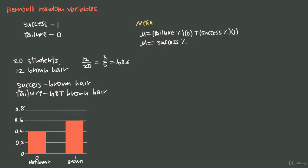We already know the percentage of success is 60% — there were 12 students with brown hair out of 20 total, and 12 divided by 20 is 60%. So whatever percentage you find for success in your data, that's going to be the mean of your Bernoulli random variable. In our case, mu equals 60%. This is often expressed as mu equals p, where p is defined as the probability of success.